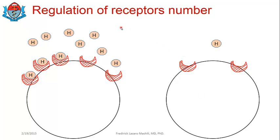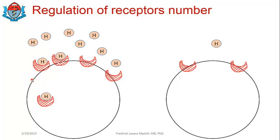Now here comes another concept: what we call regulation of receptors — what happens to receptor numbers? If you take a look at this diagram, you have a hormone-receptor complex. The hormone-receptor complex is what starts the intracellular signaling — you first form a hormone-receptor complex, then you have an activated receptor, and a series of events will start, eventually giving you a biological action.